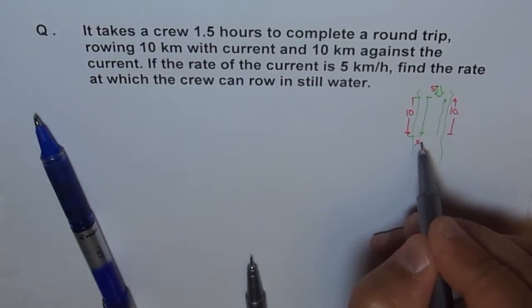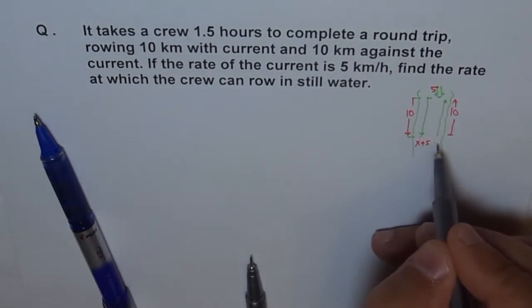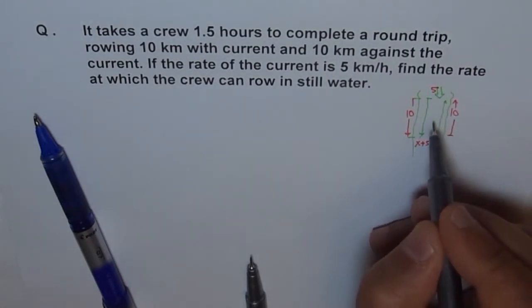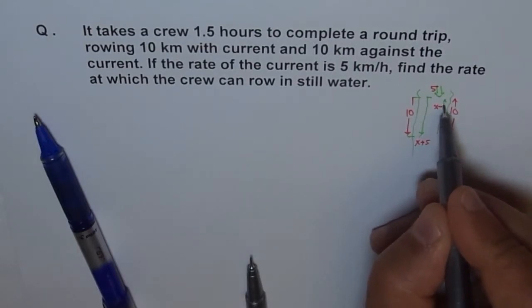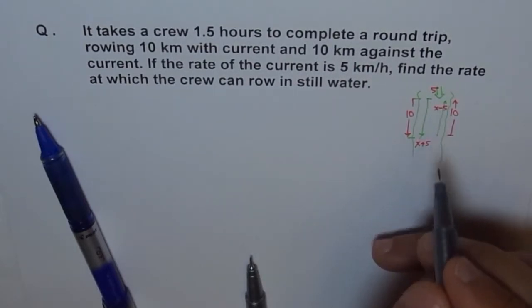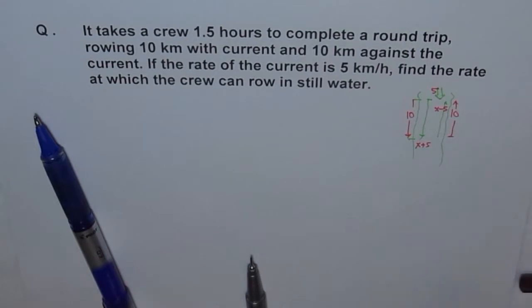So, your speed increases by 5. So, it becomes X plus 5 when you go down. But when you are going against the current, then your speed is X minus 5 because you are going against the current. So, that's the kind of situation which we are in.